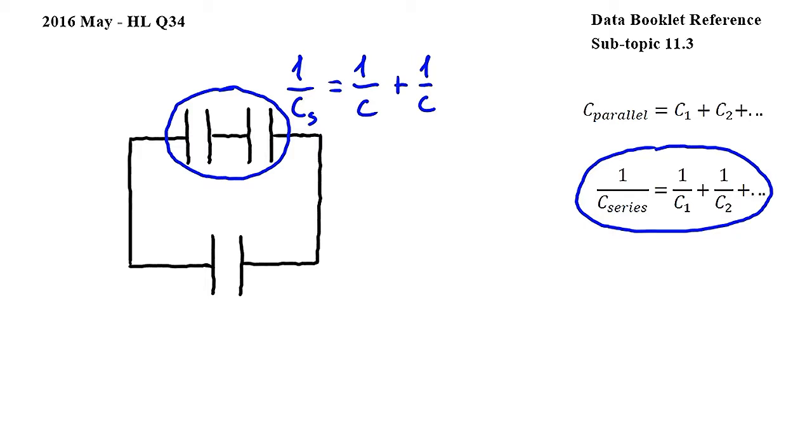1 over C plus 1 over C equals 2 over C, so 1 over C_S equals 2 over C, and by cross multiplying we get that the combined capacitance of these two capacitors is equal to C over 2.